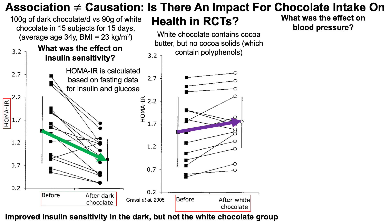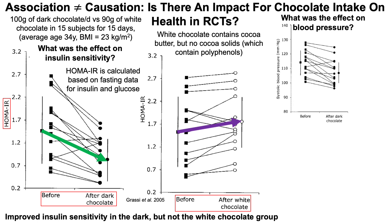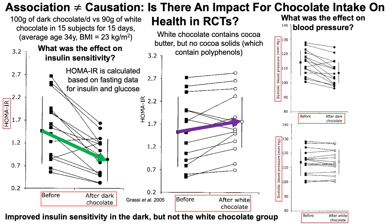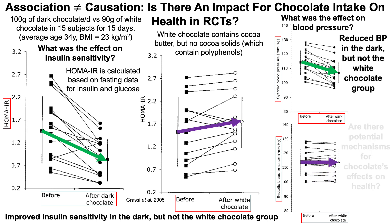The authors also looked at the effect on blood pressure in both groups. Systolic blood pressure was measured before and after dark chocolate consumption, and before and after white chocolate consumption. The dark chocolate consumers showed a reduction in blood pressure, but the white chocolate group did not.